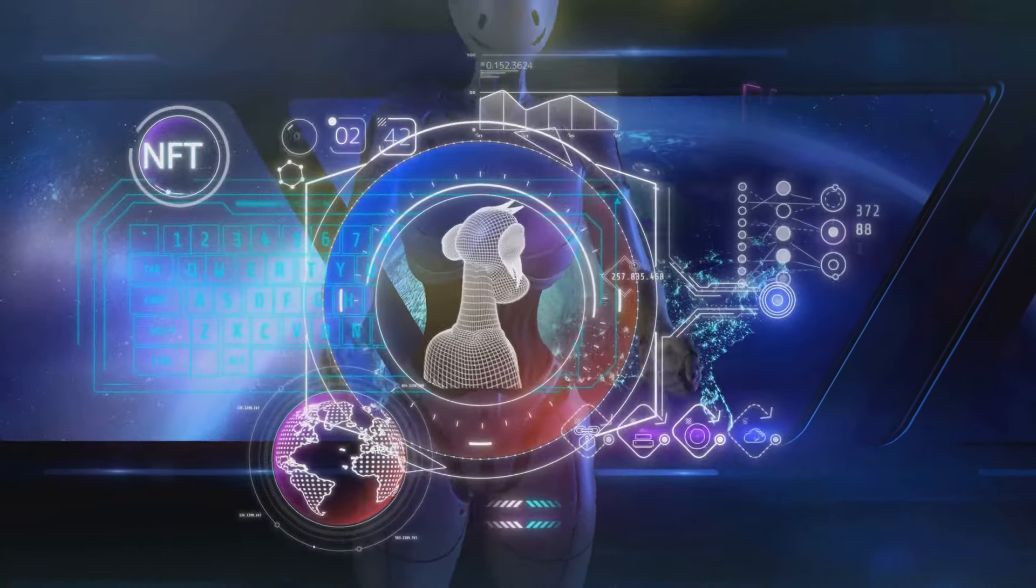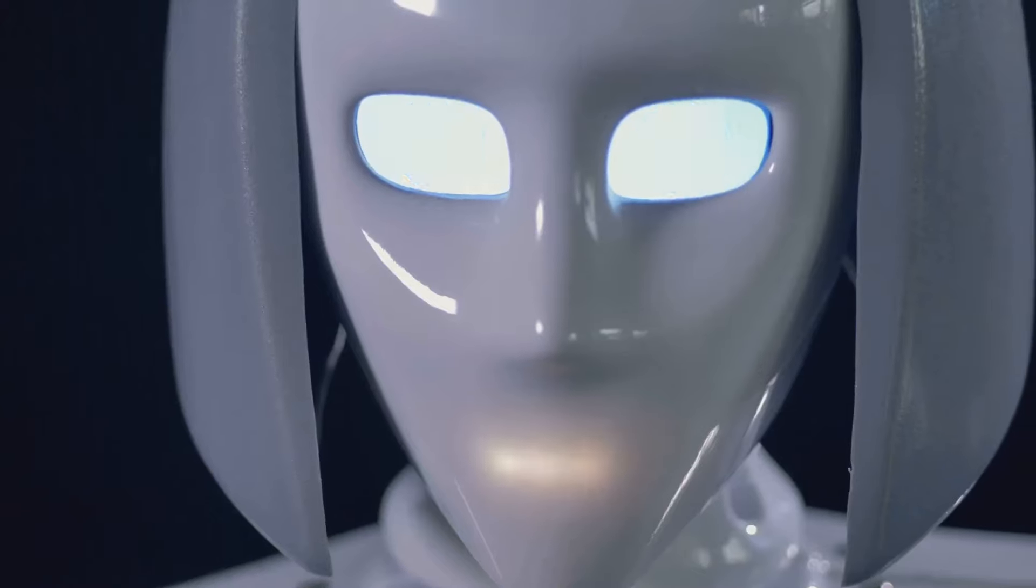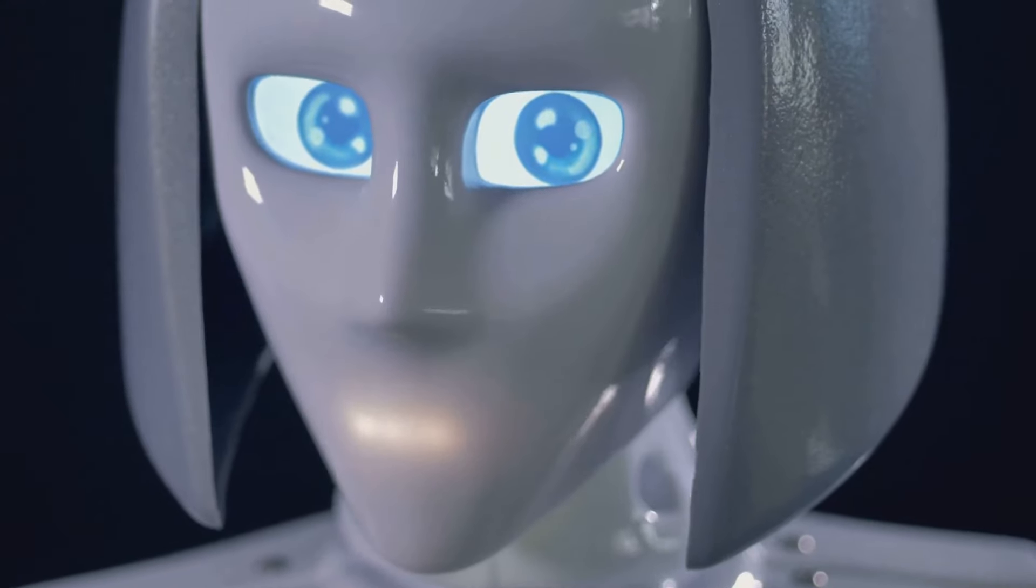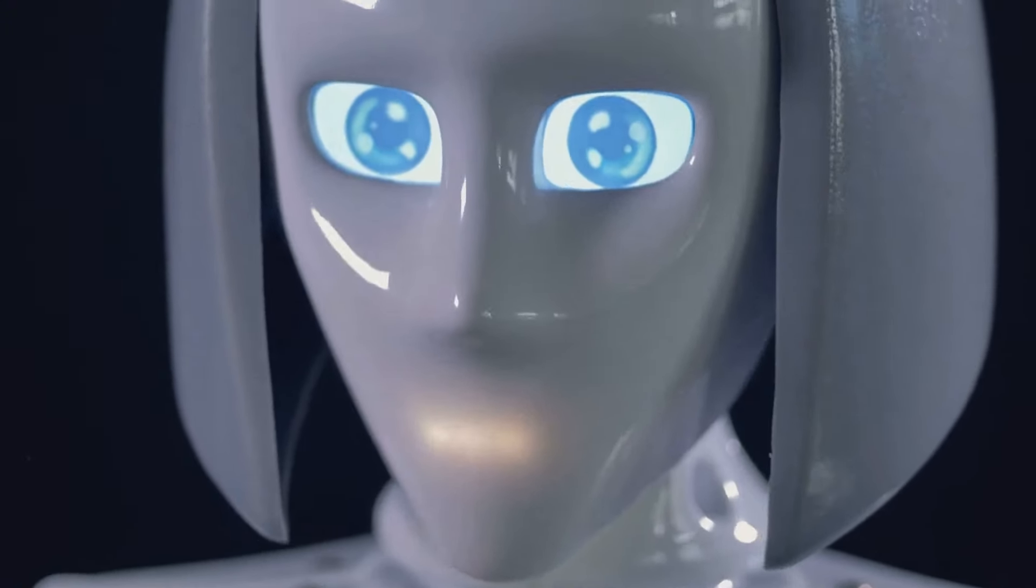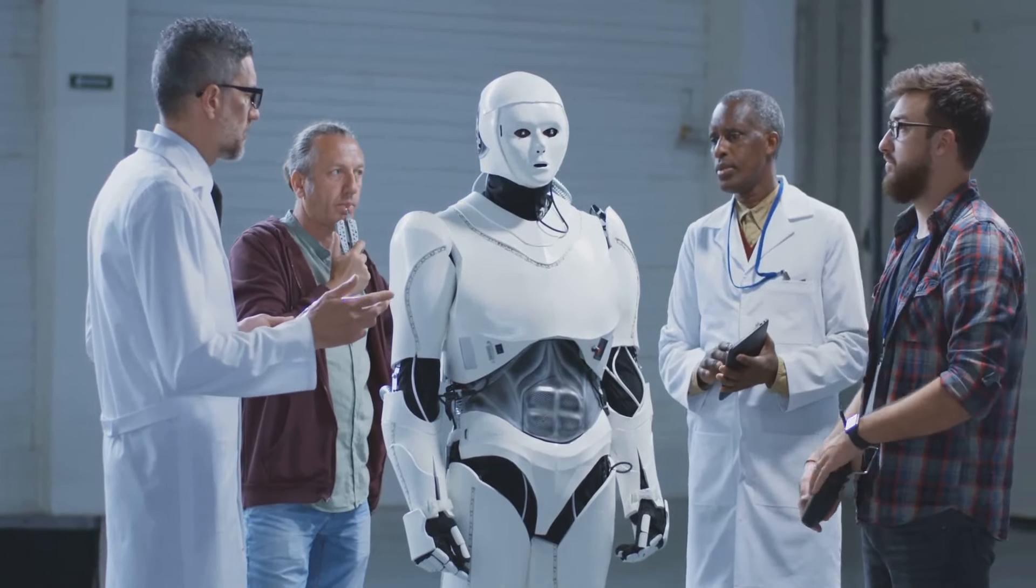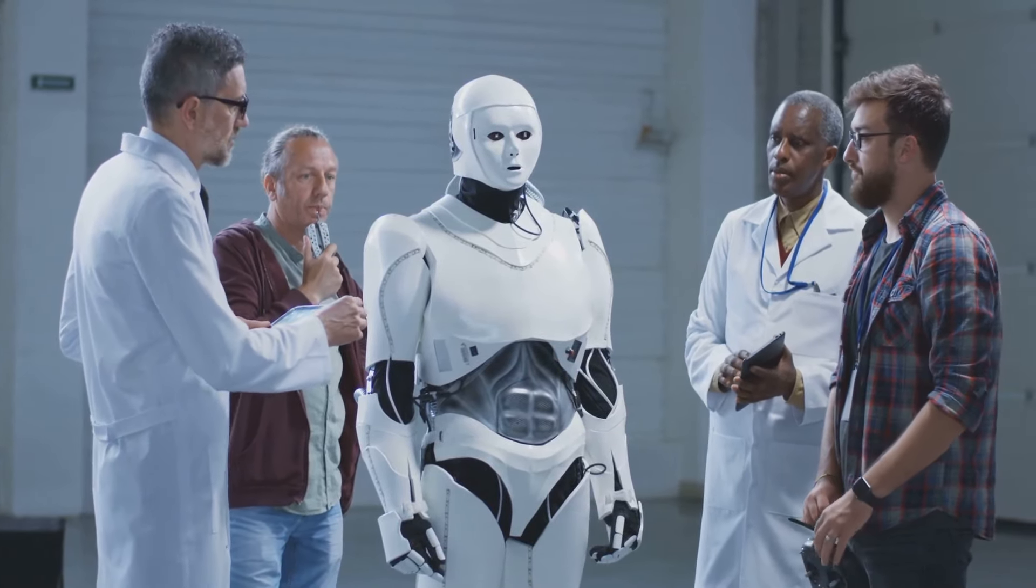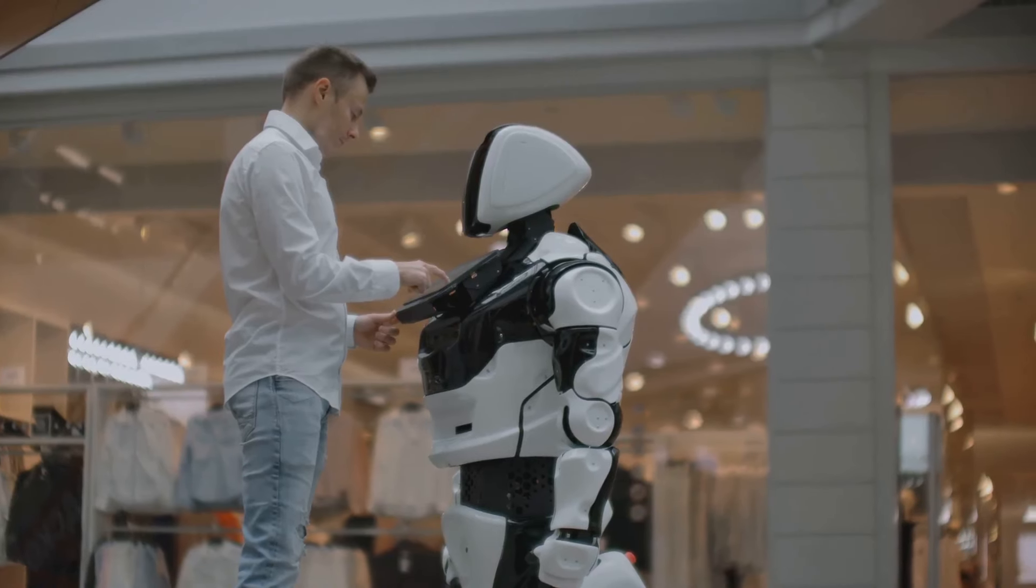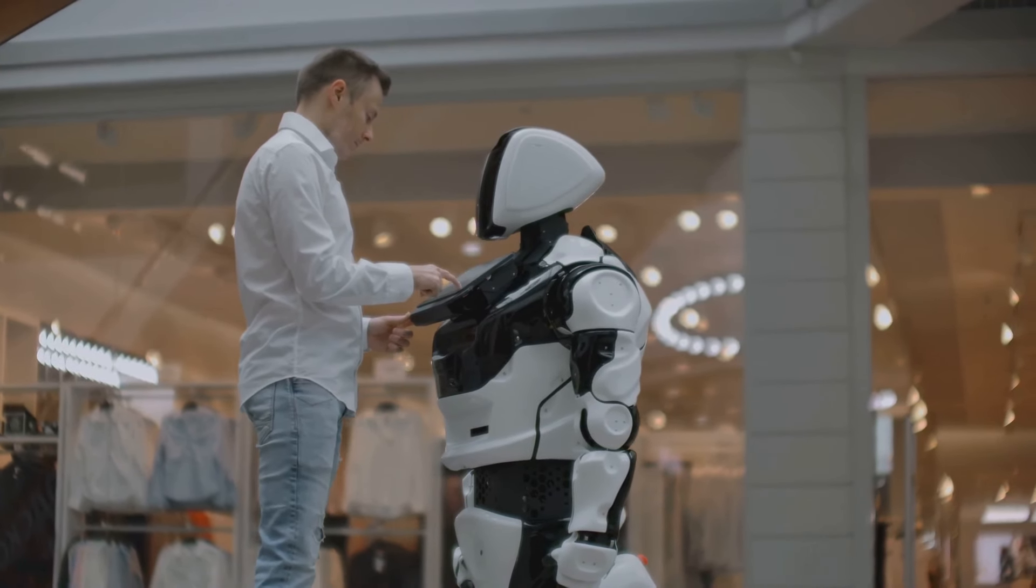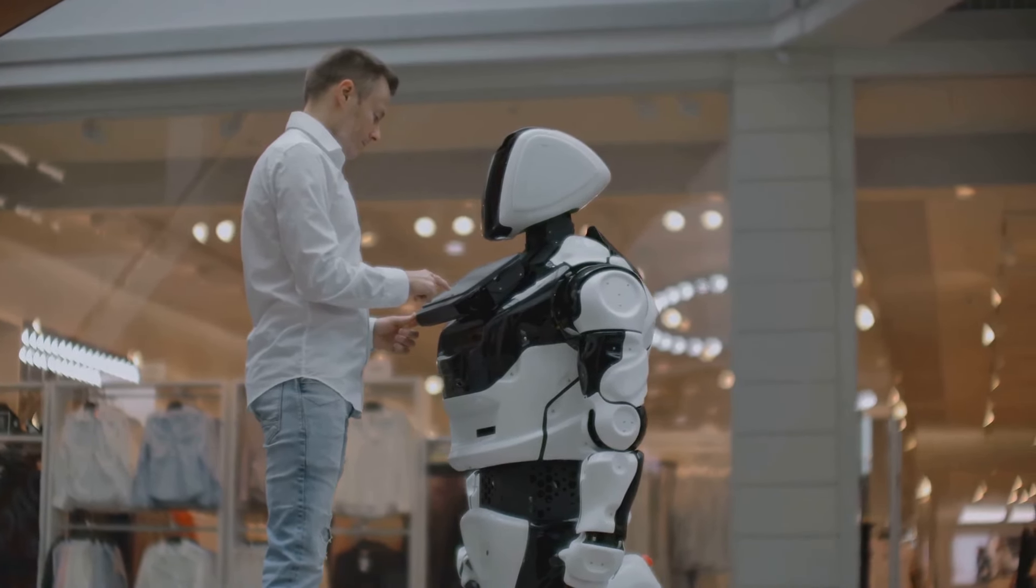The advent of AGI-ready humanoid robots like John inevitably raises profound ethical questions. As machines become increasingly intelligent and autonomous, we must grapple with the implications for human labor, privacy, and safety. Will widespread adoption of humanoid robots lead to mass unemployment as machines displace human workers in various sectors? How do we ensure that these robots are used responsibly and ethically, preventing potential misuse or unintended consequences?